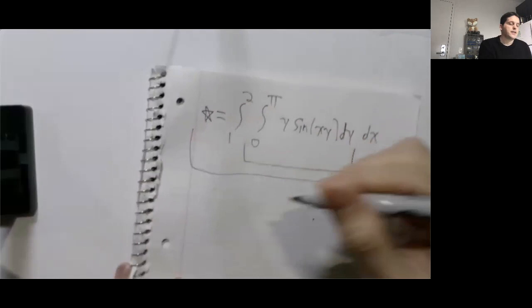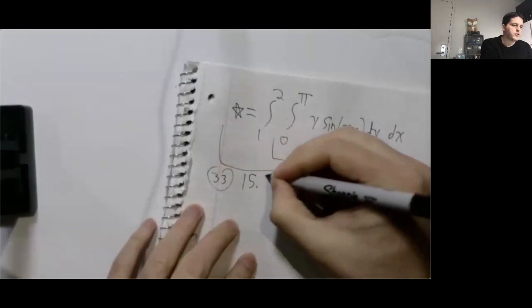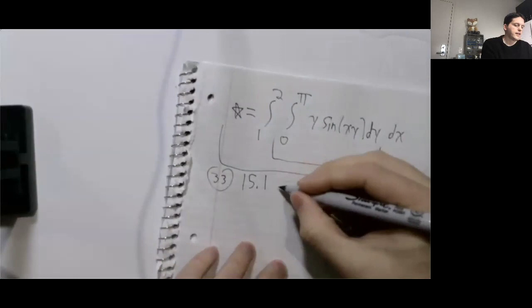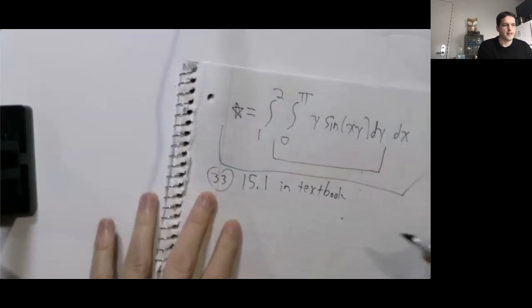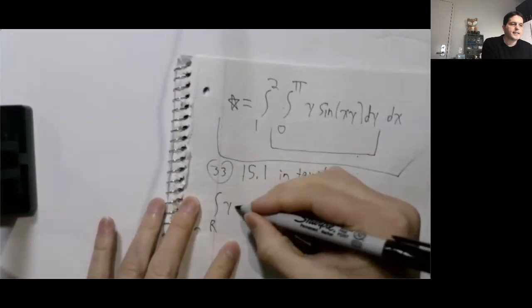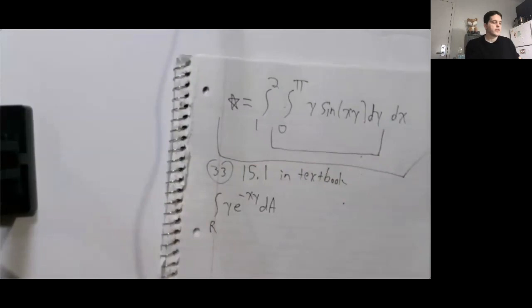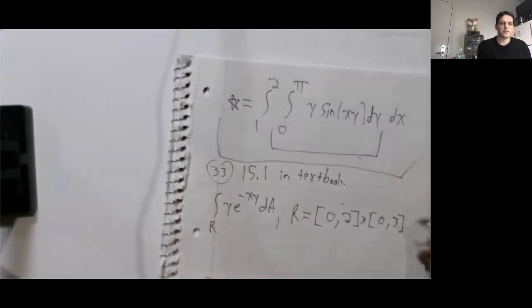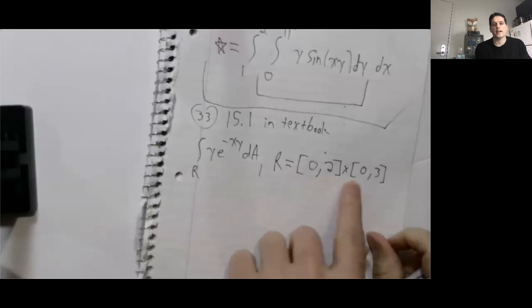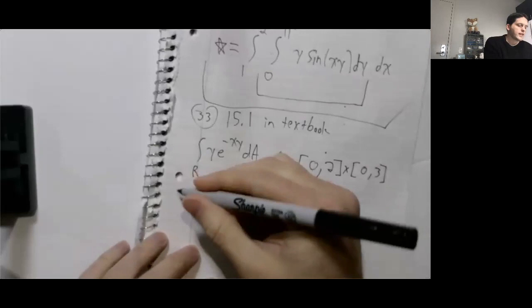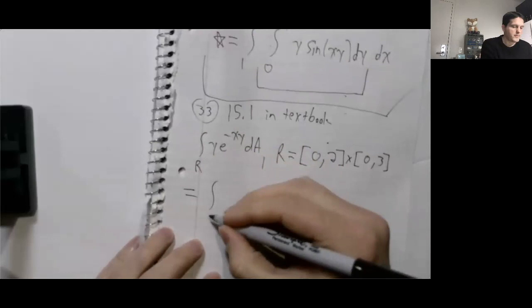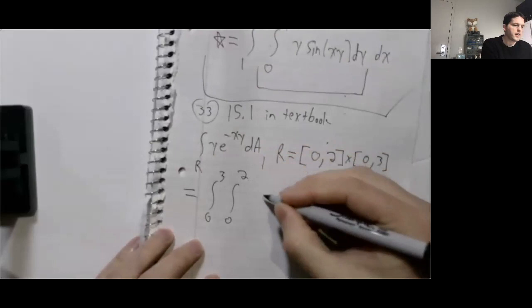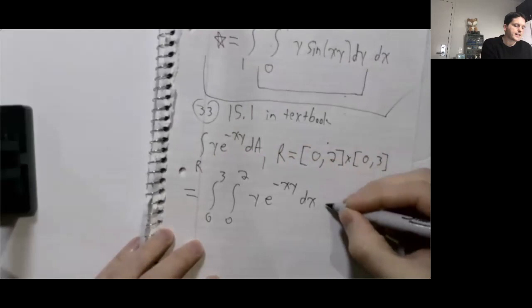Example three is problem 33 from section 15.1. We're going to do the integral over the rectangle R of y times e to the minus xy dA, where x goes from 0 to 2 and y goes from 0 to 3. By Fubini's theorem, this integral equals the integral from 0 to 3 of the integral from 0 to 2 of y times e to the minus xy dx dy.